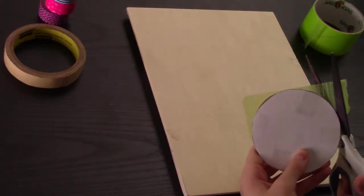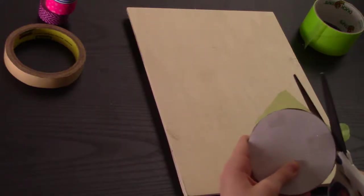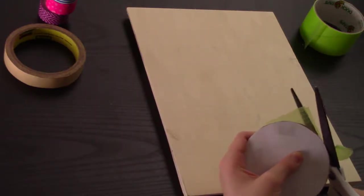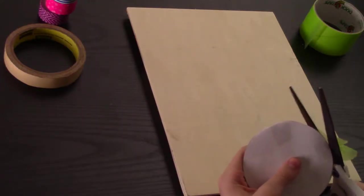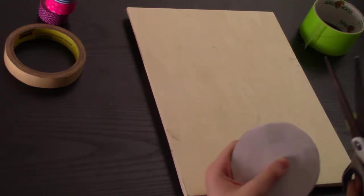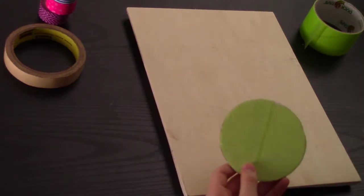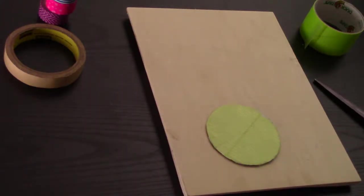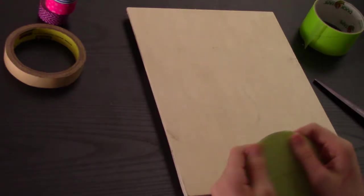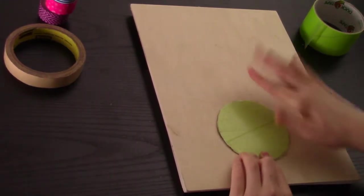So if you want, you can also decorate the bottom and make it a double-sided coaster, so it'll have two different patterns, or it can have the same pattern on one coaster. It's up to you how you want to make that, so just make sure you flatten this out.